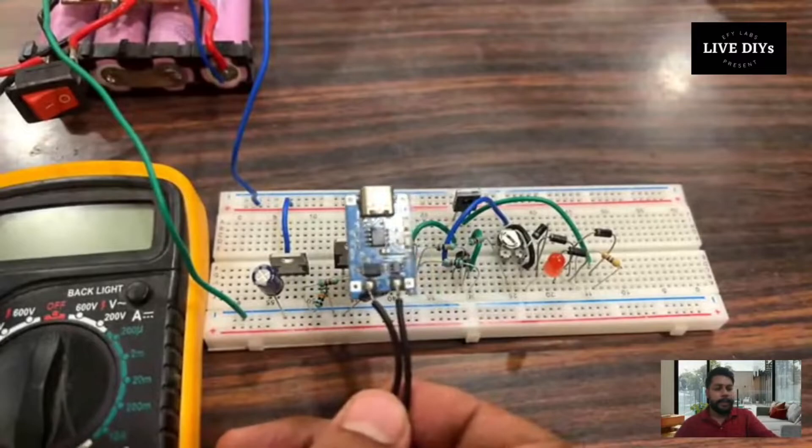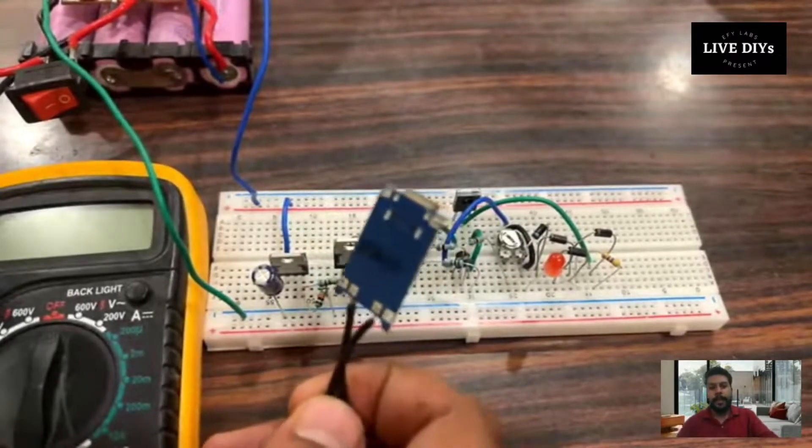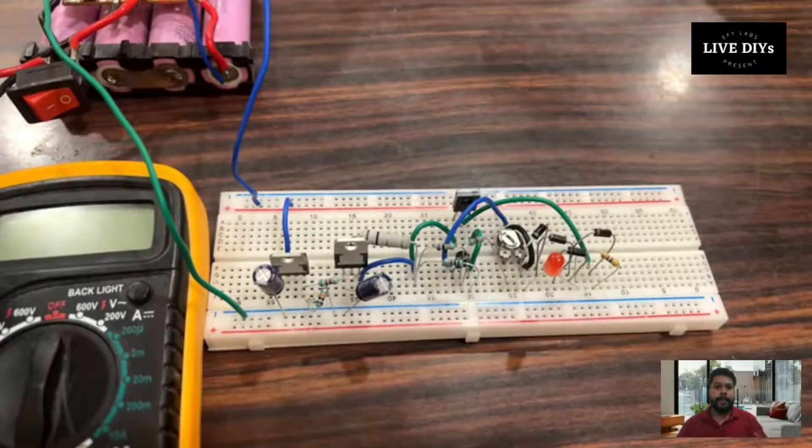One common circuit is the TP4056. This is a very common circuit used a lot for charging single NMC lithium ion cells. It is a pretty good circuit that can provide current up to 1 amp, but the main issue is that it can only charge NMC cells.